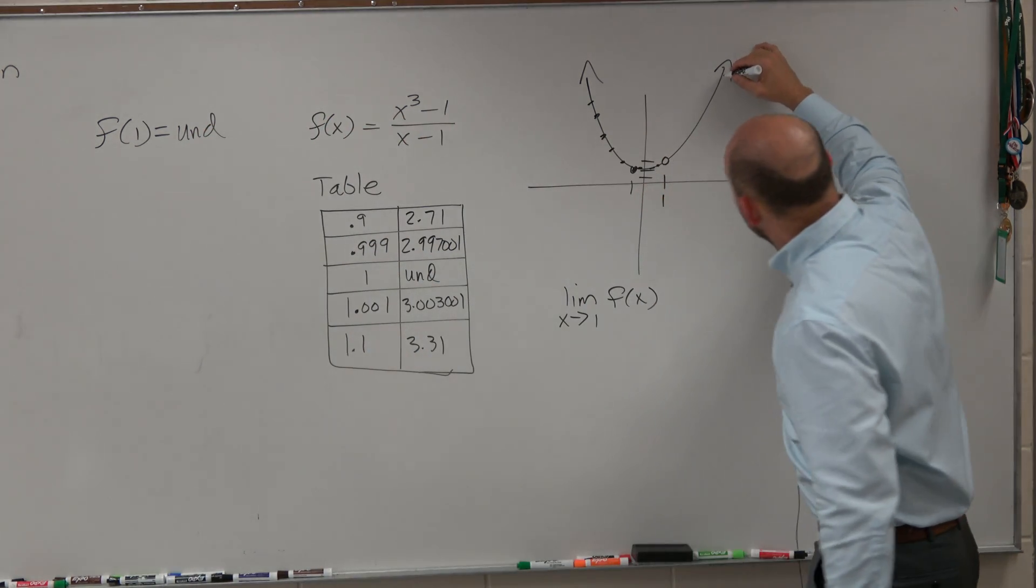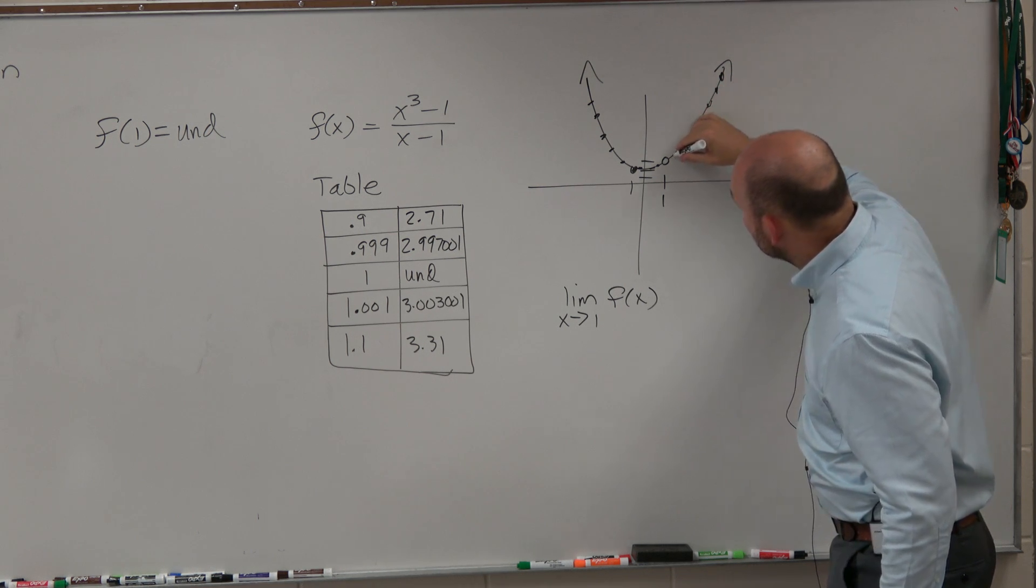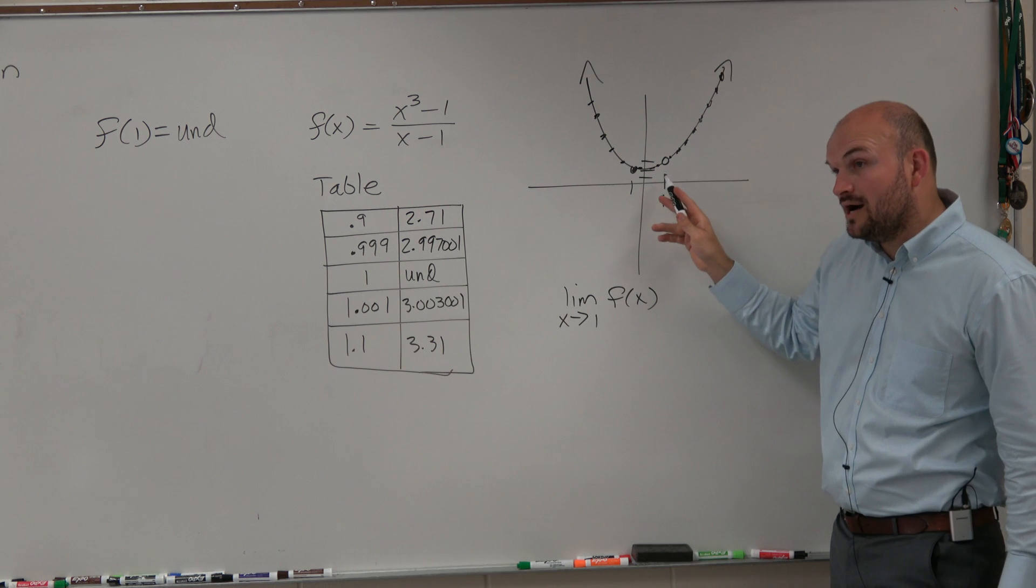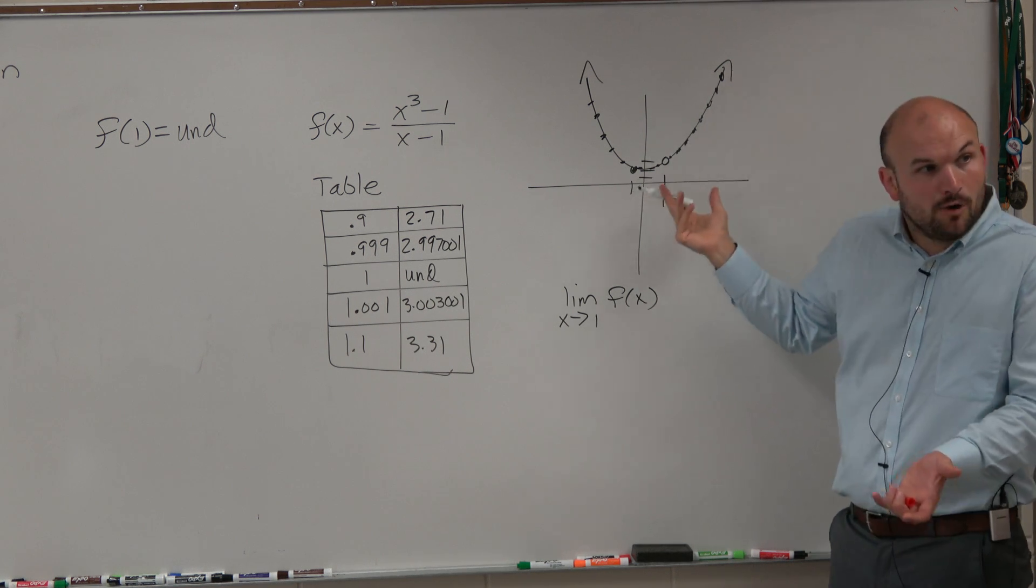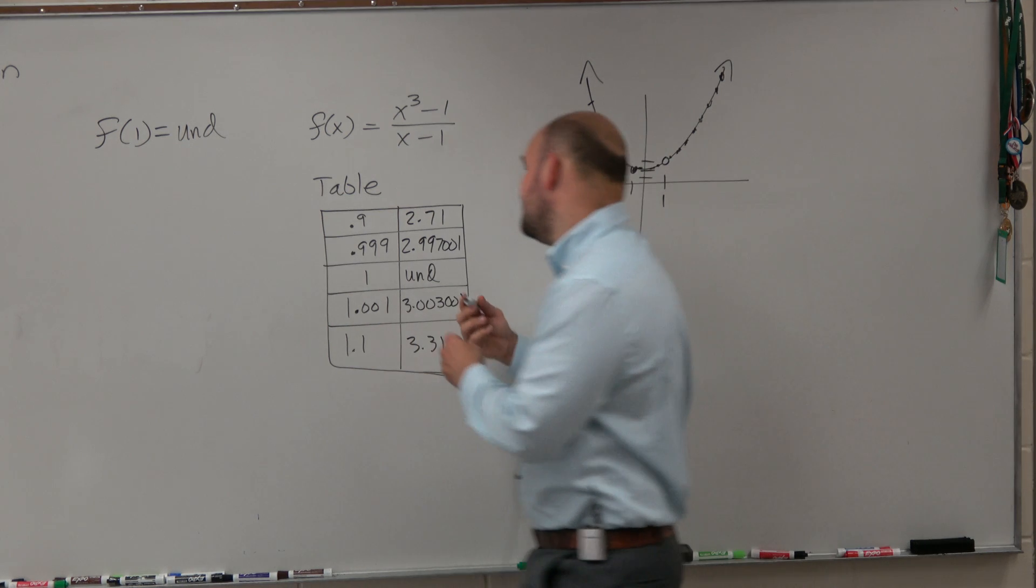And then as we choose x values from the right, getting really close to when x equals 1, the y value, or the output of the function, is getting really close to 3. And you guys can see this in the table.